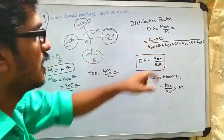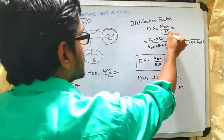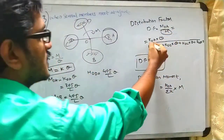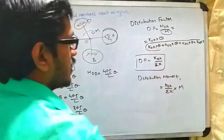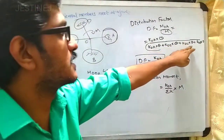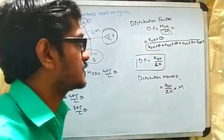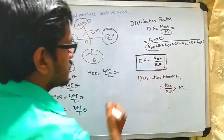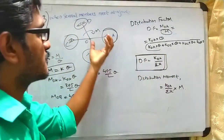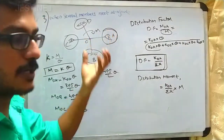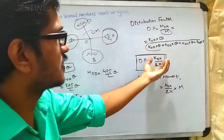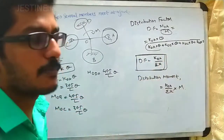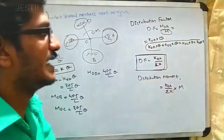The total moment M equals the summation of all moments: K_OA·θ + K_OB·θ + K_OC·θ + K_OD·θ. Therefore, the distribution factor for a particular beam segment is K_OA divided by the summation of all stiffnesses (ΣK).